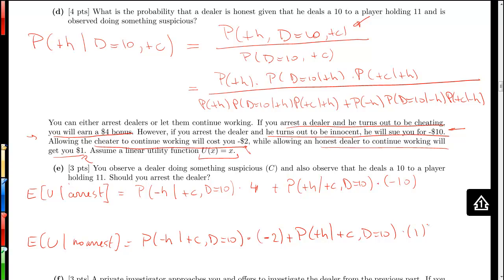Now, what's left to do is to compute the probabilities of having an honest versus dishonest dealer, given that we saw something suspicious and a 10 was dealt. That's exactly what we computed in part D. So at this point, given the problem statement, we express the answer to this question in terms of quantities we've computed in previous questions.